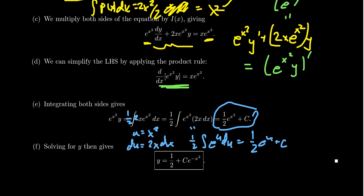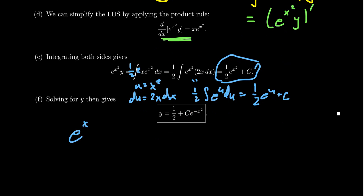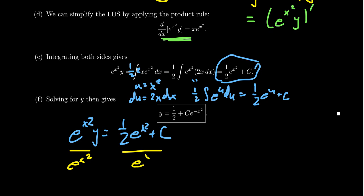So we have e to the x squared times y equals 1/2 e to the x squared plus a constant. Dividing both sides by e to the x squared gives us the final result: y equals 1/2 plus c times e to the negative x squared. The constant c cannot absorb the e to the negative x squared, because the arbitrary constant can only absorb constants, not a function. This is the general solution.